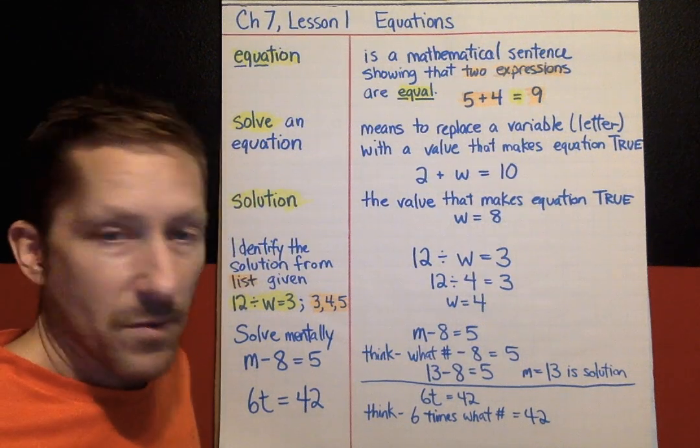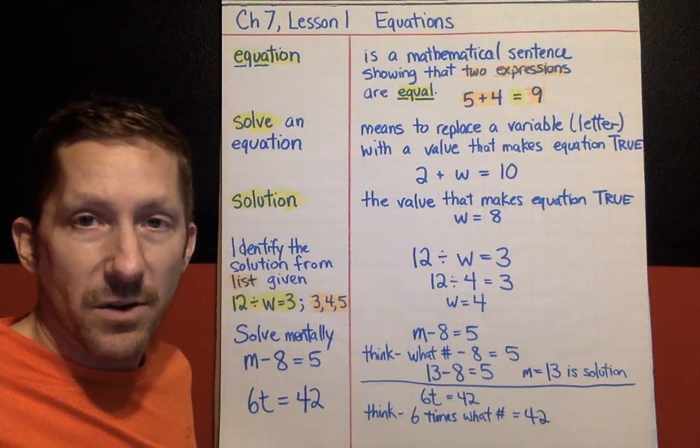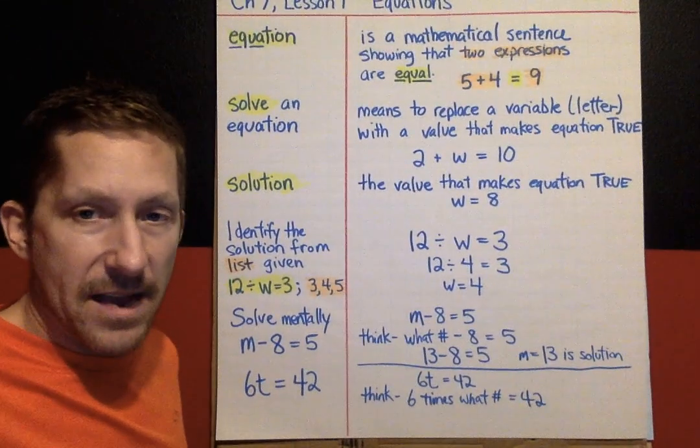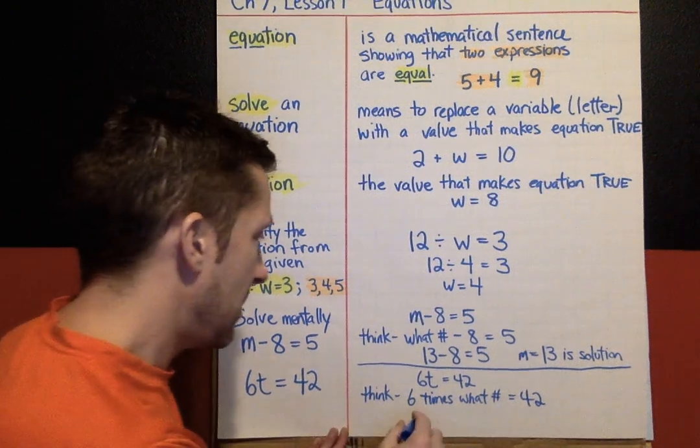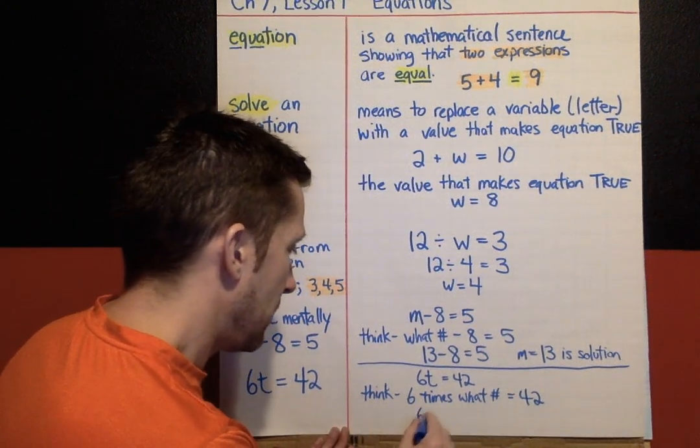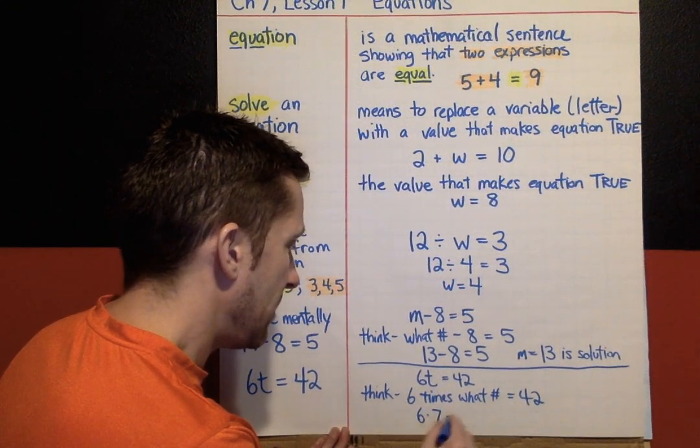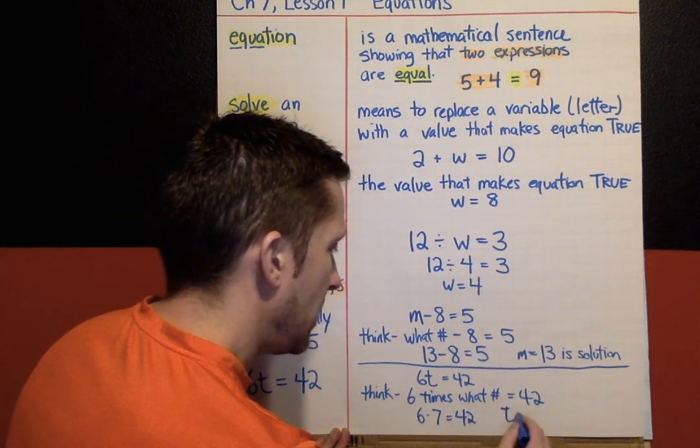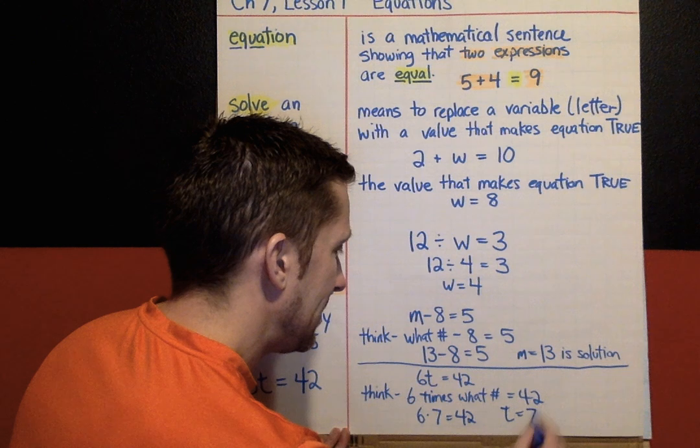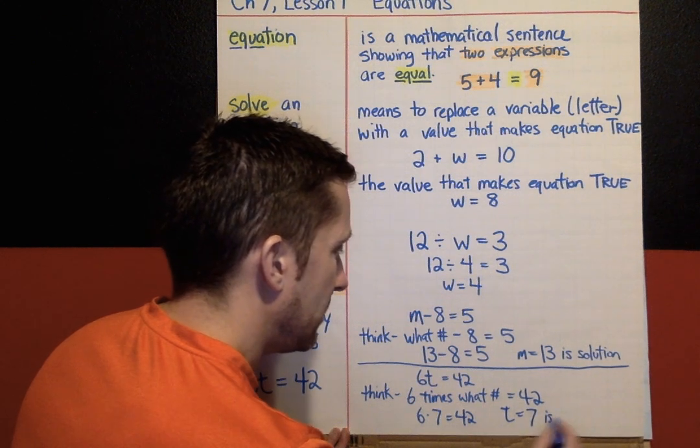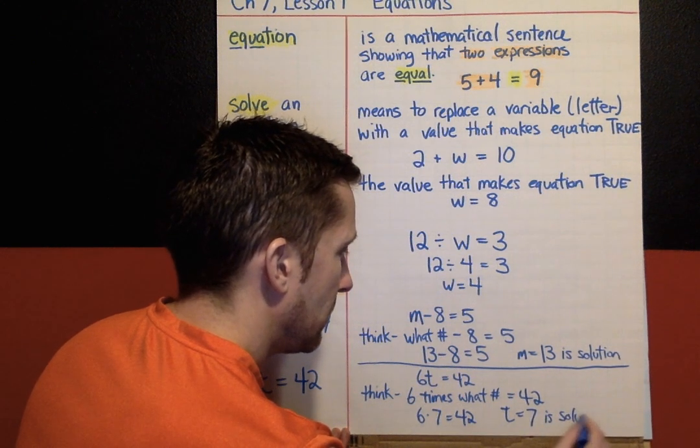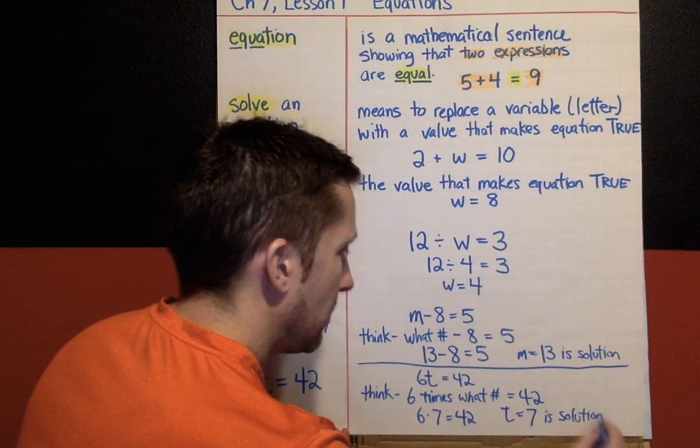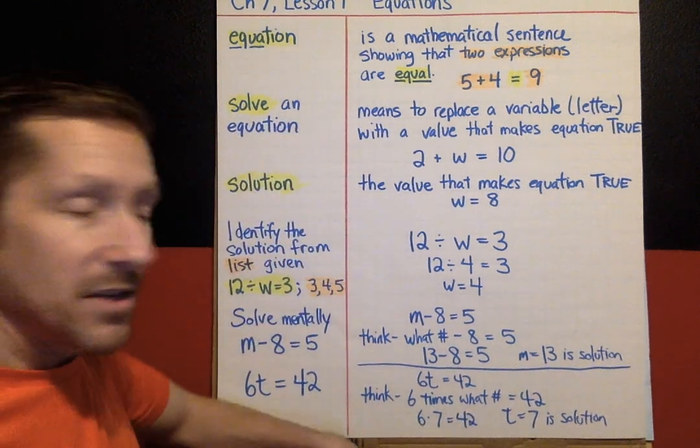The answer is 6 times 7 equals 42. So, the solution, t equals 7, is the solution for that equation.